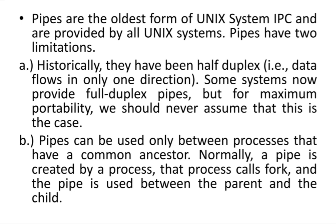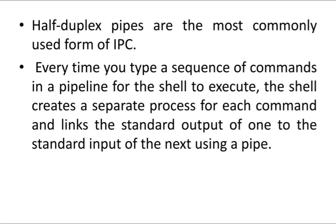Another important limitation is that a pipe can be used only between processes that have a common ancestor. In simple words, a pipe can be created between a parent and child. Normally, a pipe is created by a process that then calls fork, and the pipe is used between the parent and the child.